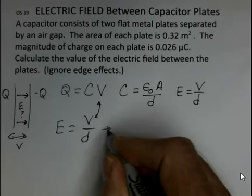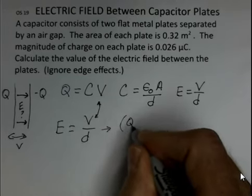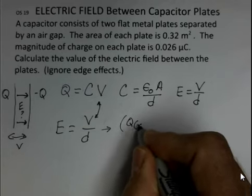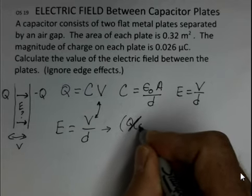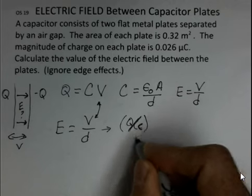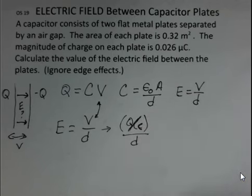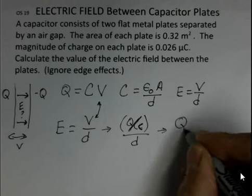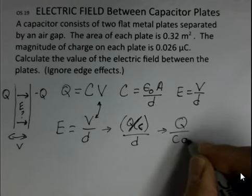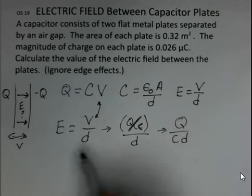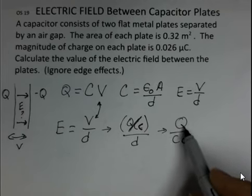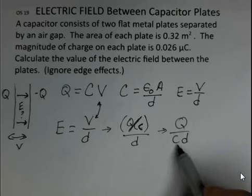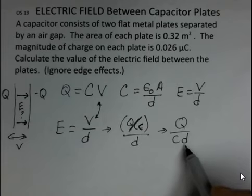So I'm going to make that substitution. I'd have Q divided by C, Q divided by C and then over D. And I can drop the C down to the numerator to make this look a little cleaner. It looks like this. So the electric field can be calculated if you know the charge on the plate, the capacitance value, and the distance between the two plates.